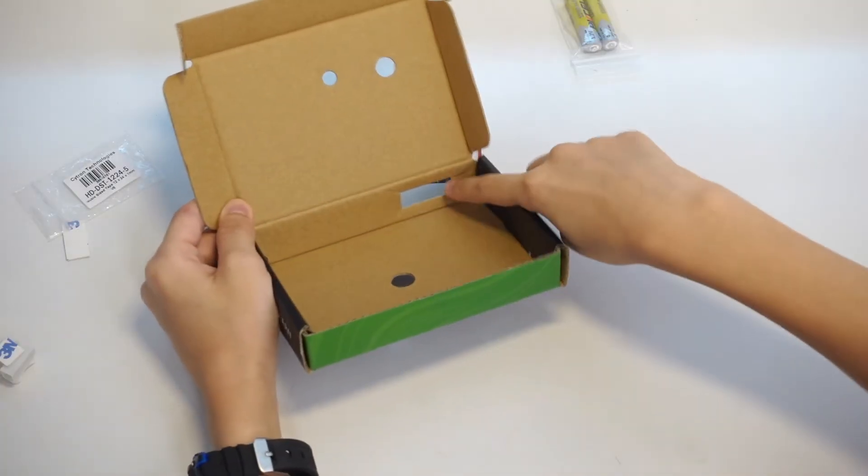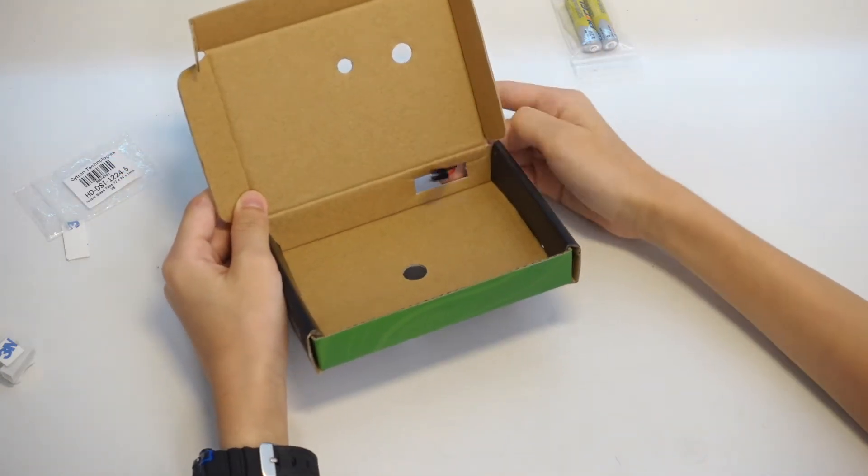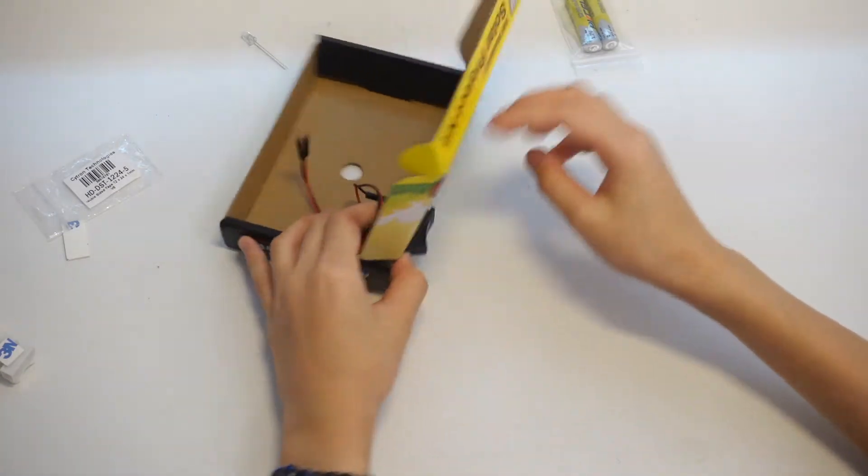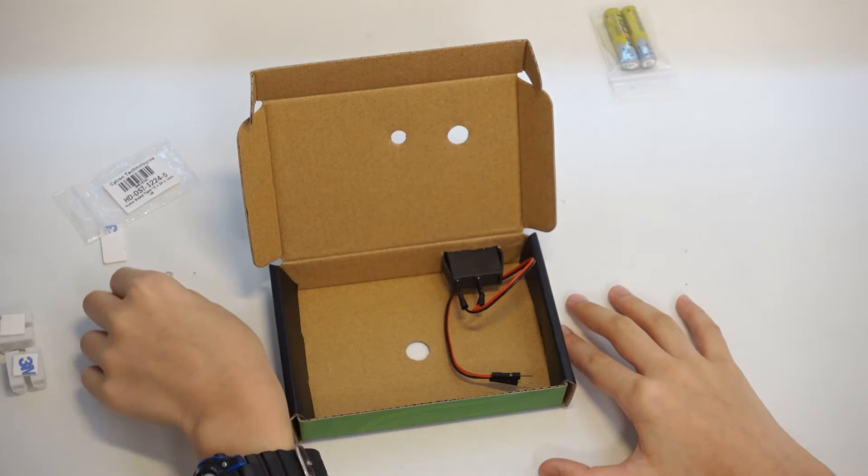Let's start with the square hole. The switch goes in. Now, the LED.